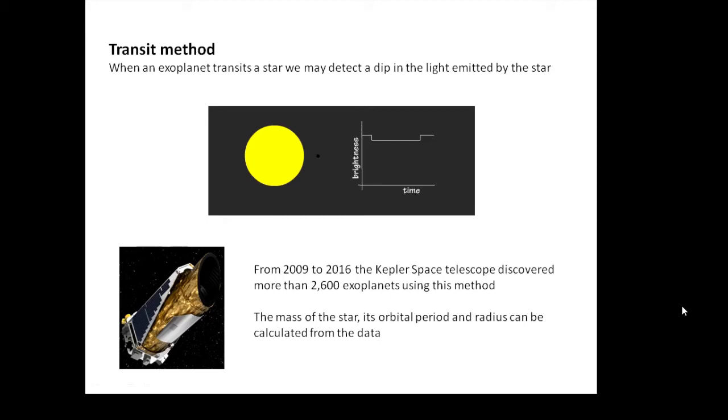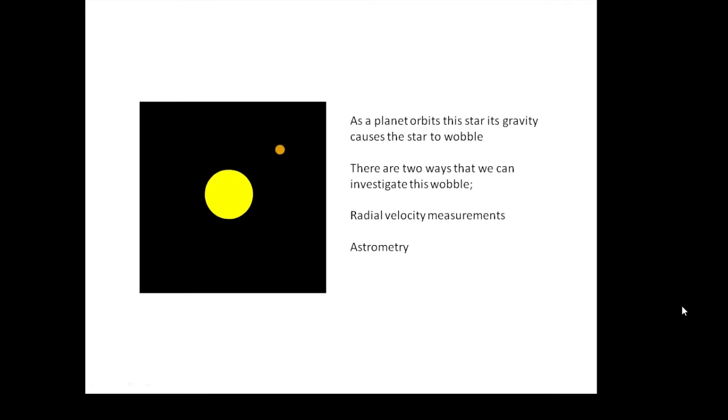If you look at this animation, there's a planet going around a star, but look at the star and notice that it is moving—it is wobbling. Why is it wobbling? Well, it's because of the gravity of the planet, because the center of gravity of both of them isn't in the middle of the star.